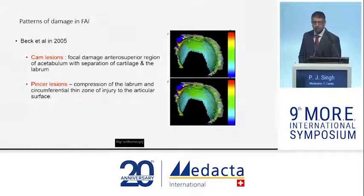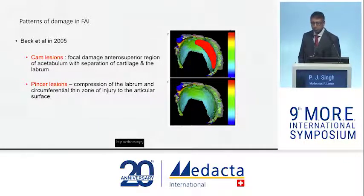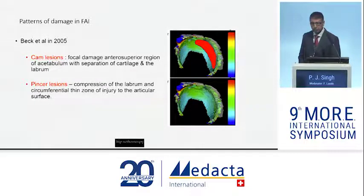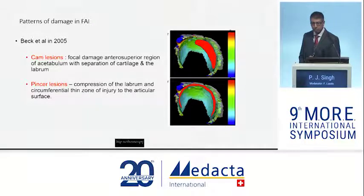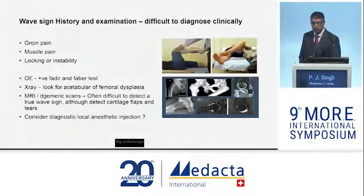Martin Beck simplified things and made it easy to understand that the patterns of damage were very reproducible: in CAM lesions, damage is anterior-superior, and in pincer lesions — particularly global pincer lesions — there is circumferential damage to the articular cartilage. And this is what we see arthroscopically.